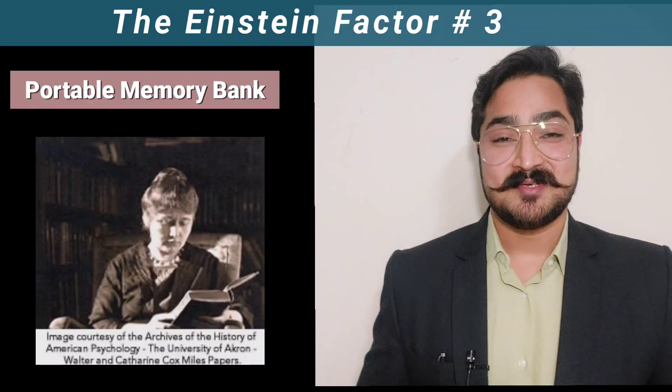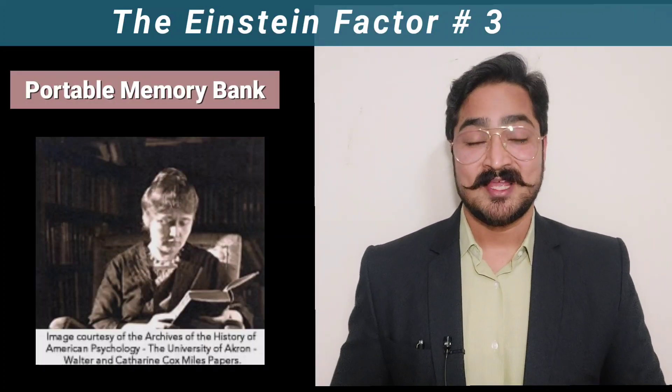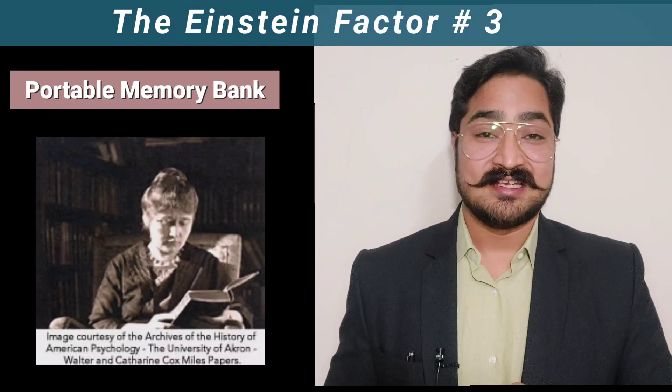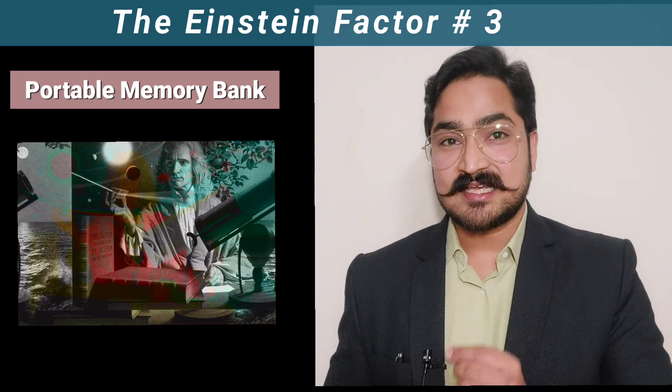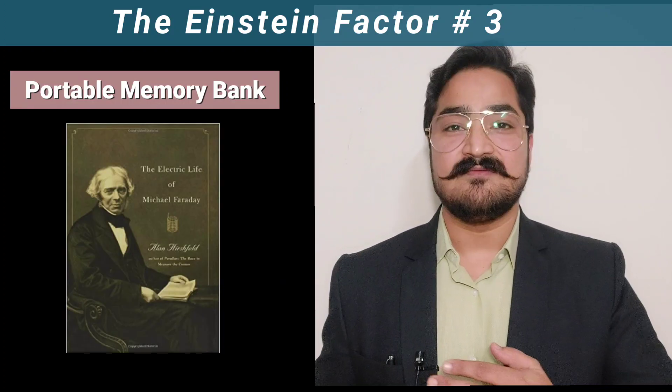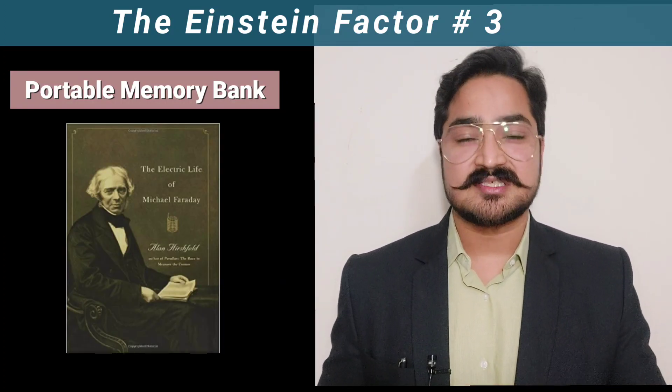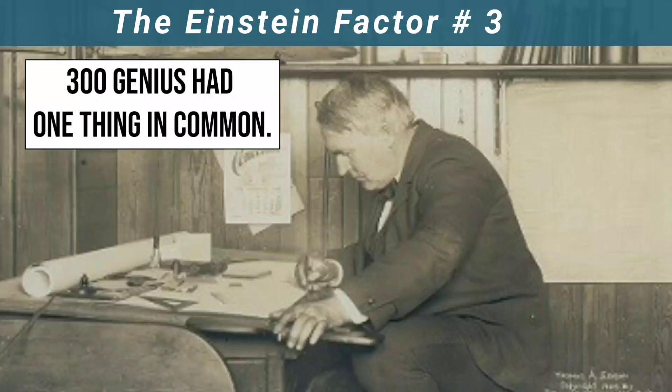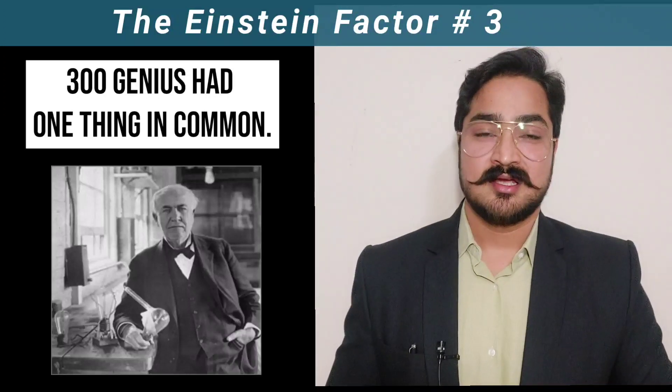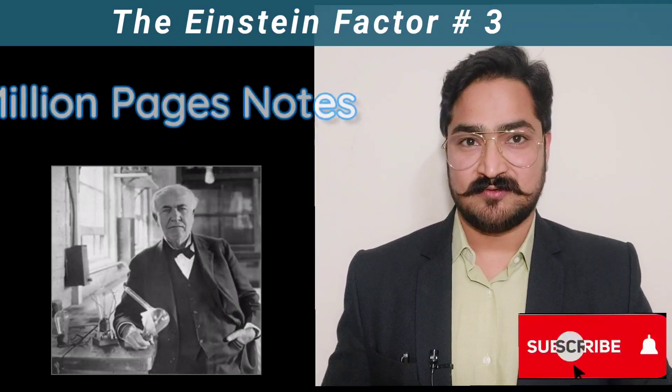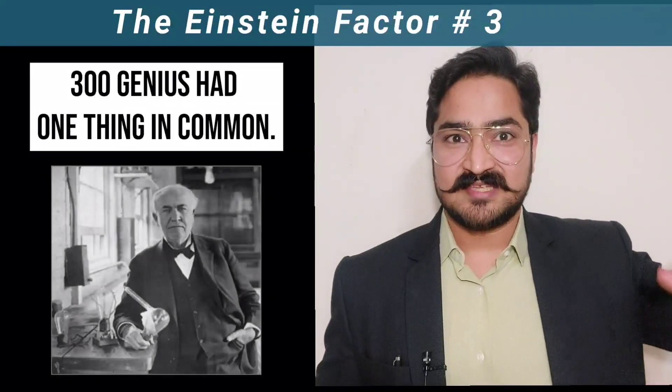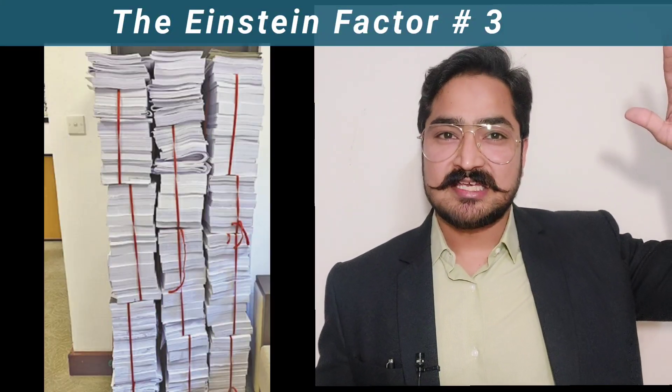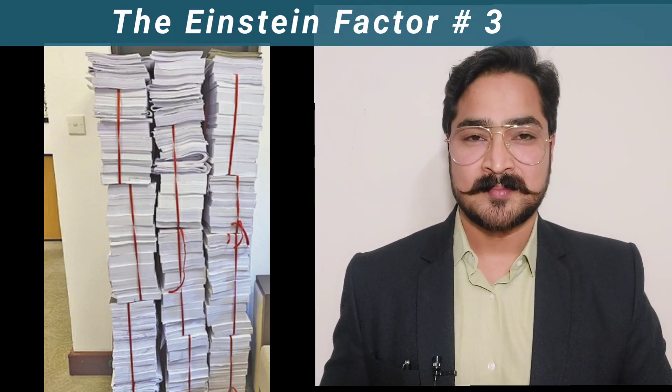After giving a warm-up to your brain, let me introduce you to Portable Memory Bank. In 1920, Catherine Cox did a study on 300 geniuses, which included people like Isaac Newton, Albert Einstein, Michael Faraday and various other people of diverse fields. All these people were fond of scribbling their ideas throughout the day. That's where Thomas Edison wrote 3 million pages of notes by the time he died in 1931. And if you make a pile of these papers, it will come out to be 900 meters tall.